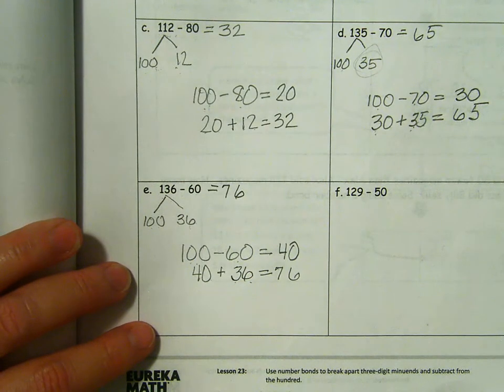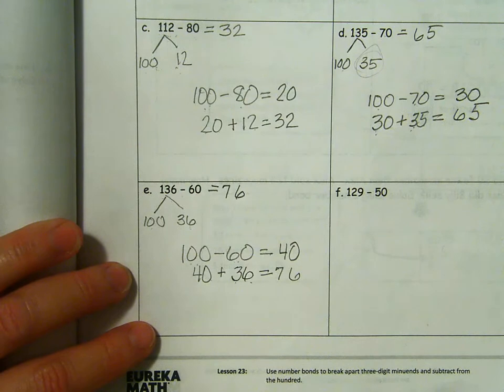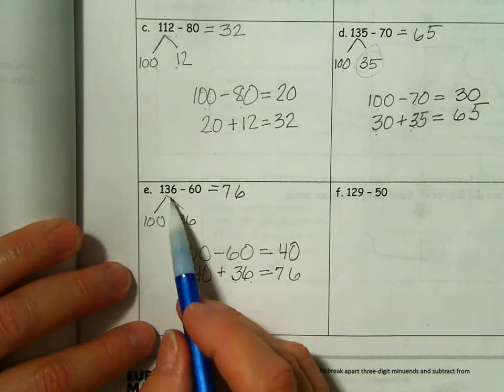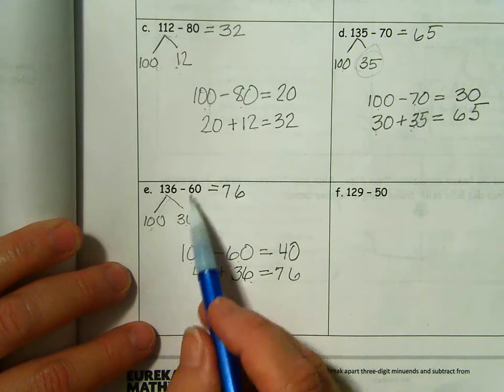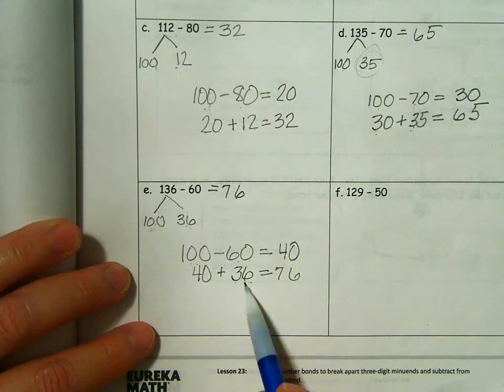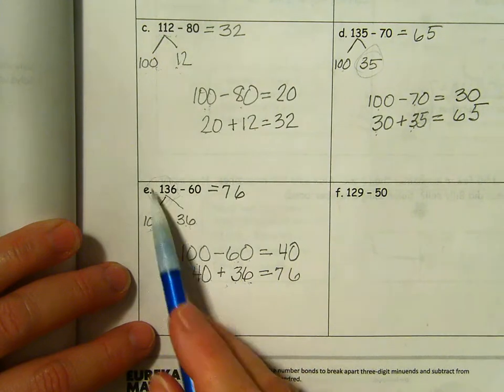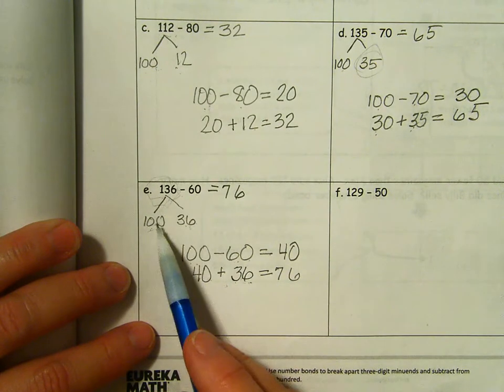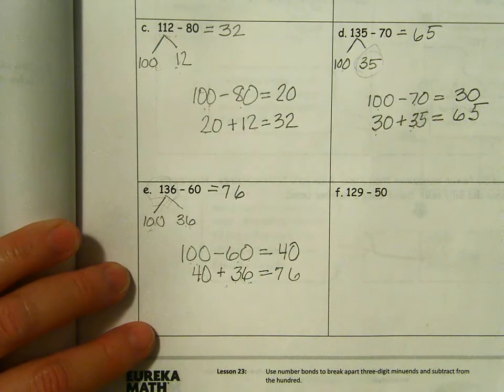If you did not do the same thing that I did, see if you can figure out where you made your mistake. Remember, we're trying to get 100 out. 36 is what is left. We subtract from the 100 part and then we add the other part to that answer because we need to subtract from the whole. And when we have 100 minus 60, we're just subtracting from this part. We have to add the other part back in to get the answer.